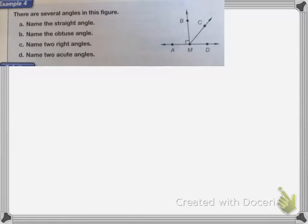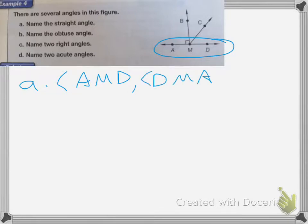Okay, here there's lots of different angles in this figure. So I need to name the different types. So for A, name the straight angle. So that just means it's going to be a straight line. So my straight line is here. It's AMD. So you would write for A, you would write angle AMD. Or you could write it as DMA. Either way works.